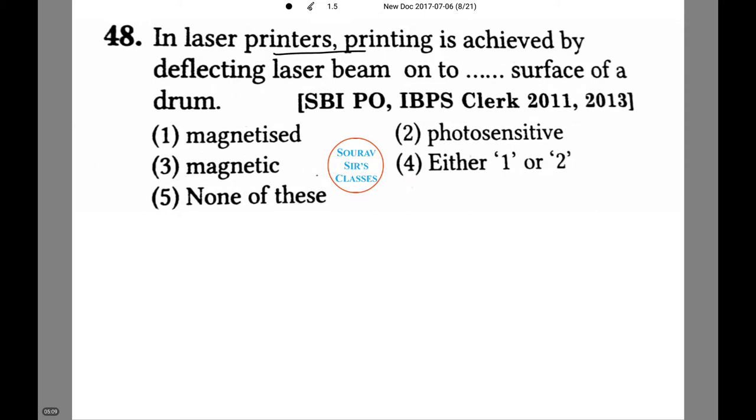In laser printers, printing is achieved by deflecting laser beams onto the surface of a drum. These are the four options. In laser printers, printing is achieved by deflecting laser beams on a photosensitive surface of a drum. There is no magnetism involved in a laser printer. Thus these three options are not there. Hence option number two is the correct answer.